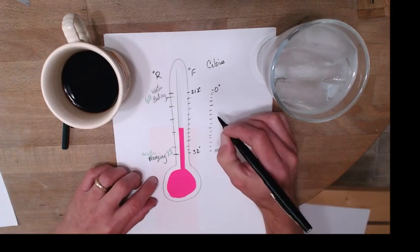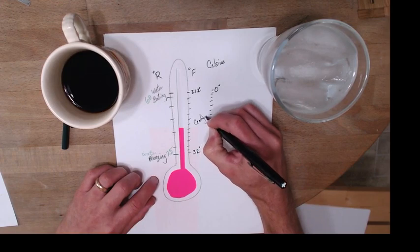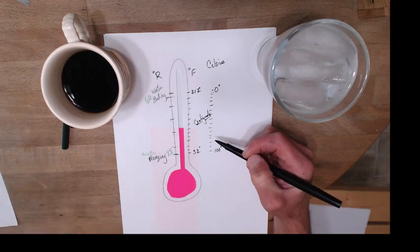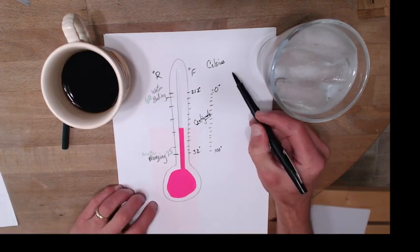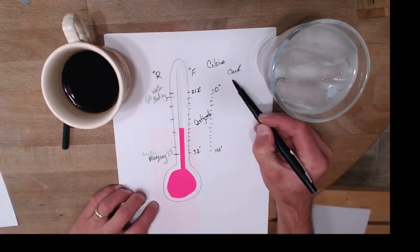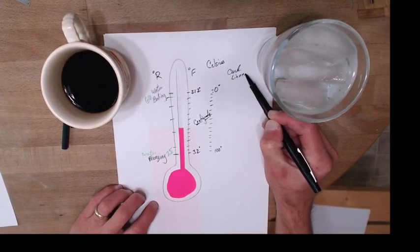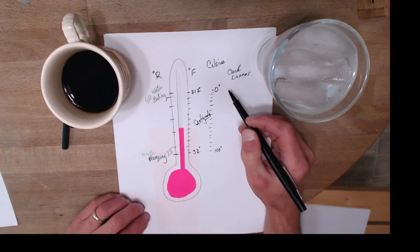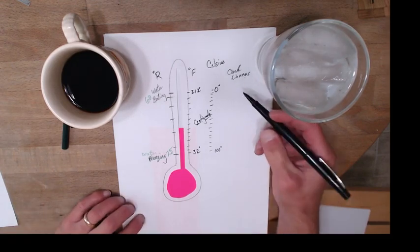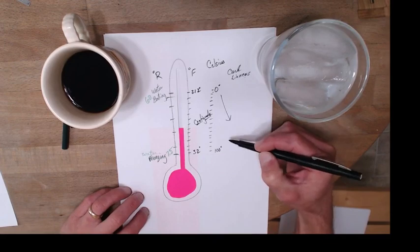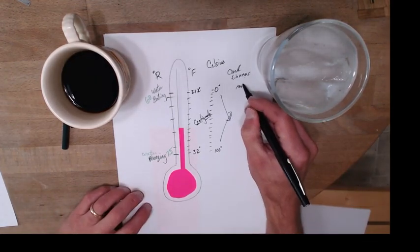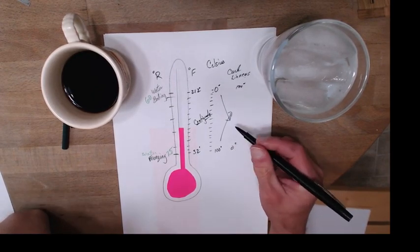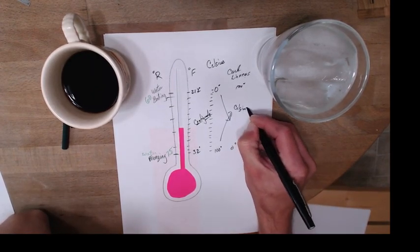So he actually called it the Centigrade system. Centigrade meaning 100 divisions that are in there. And so then after he passes away, Carl Linnaeus—oops, there's an egg in there somewhere—of biology fame, said 'Let's flip those around because that just makes more sense.' So then he's the one who named this after the Celsius scale. He's the one who called it that.